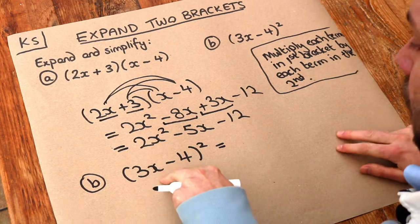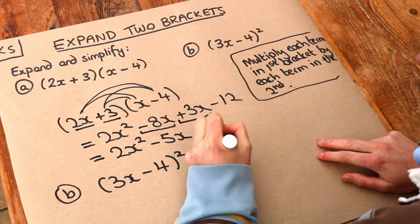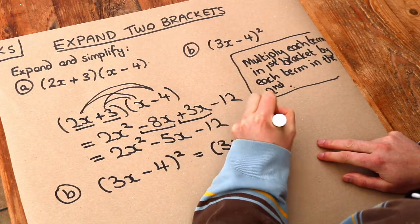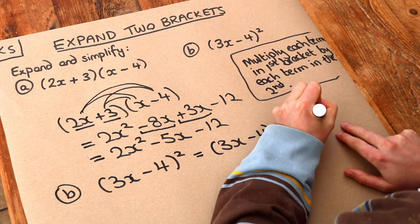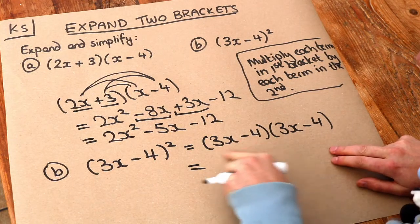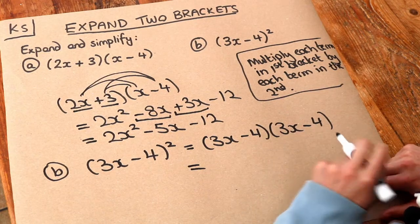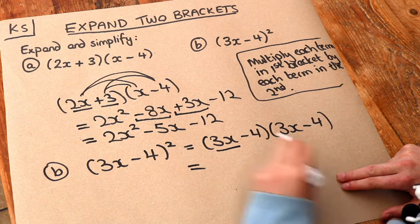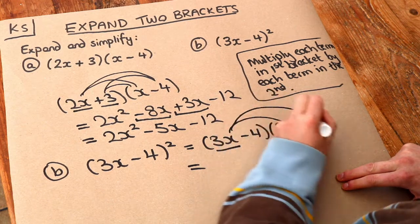So 3x minus 4 squared is 3x minus 4 multiplied by 3x minus 4. So we write out the bracket twice and then we can do the same thing as above. We do each thing in the first bracket multiplied by each thing in the second. So let's do the first thing in the first bracket multiplied by each of the things in the second.